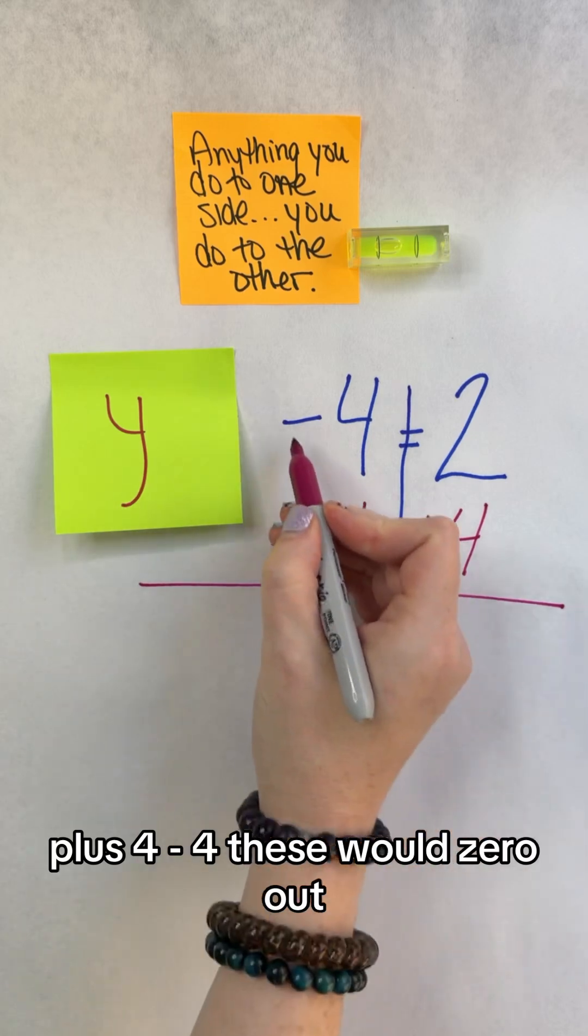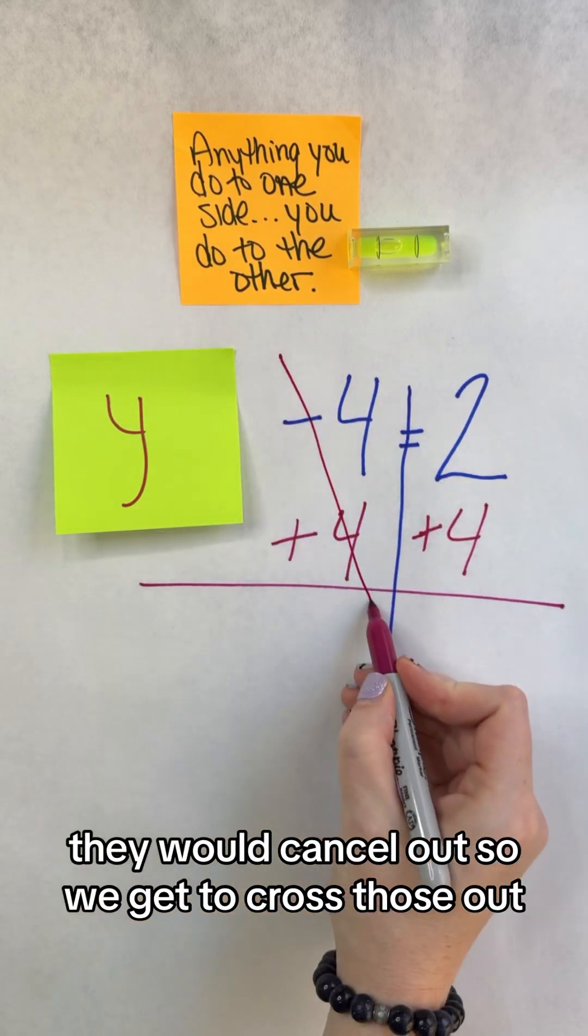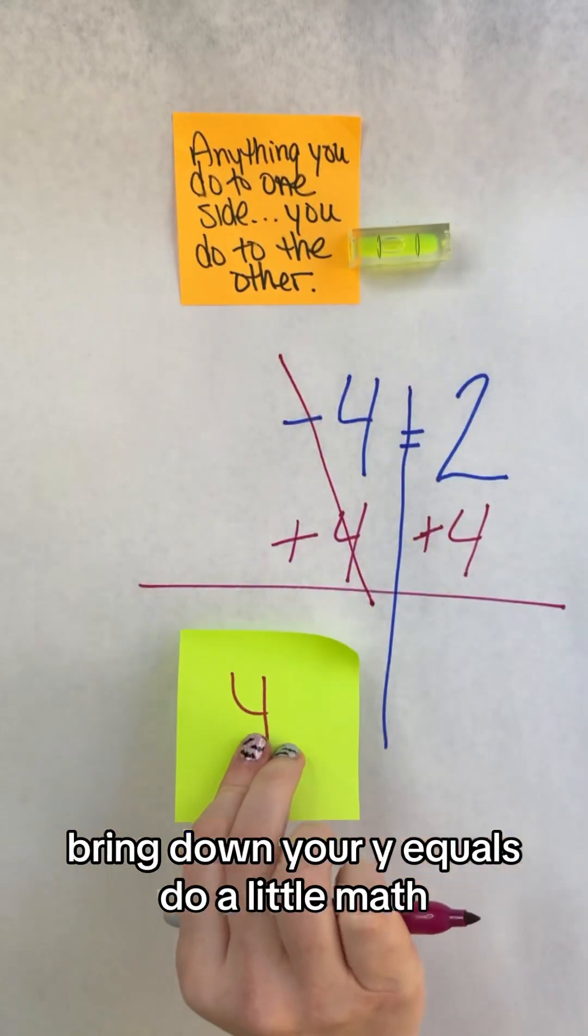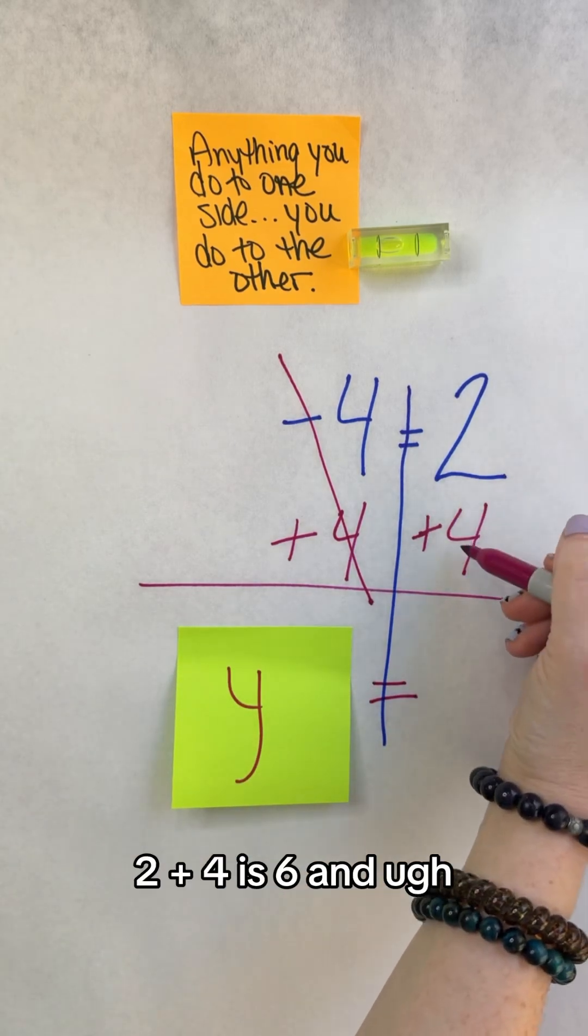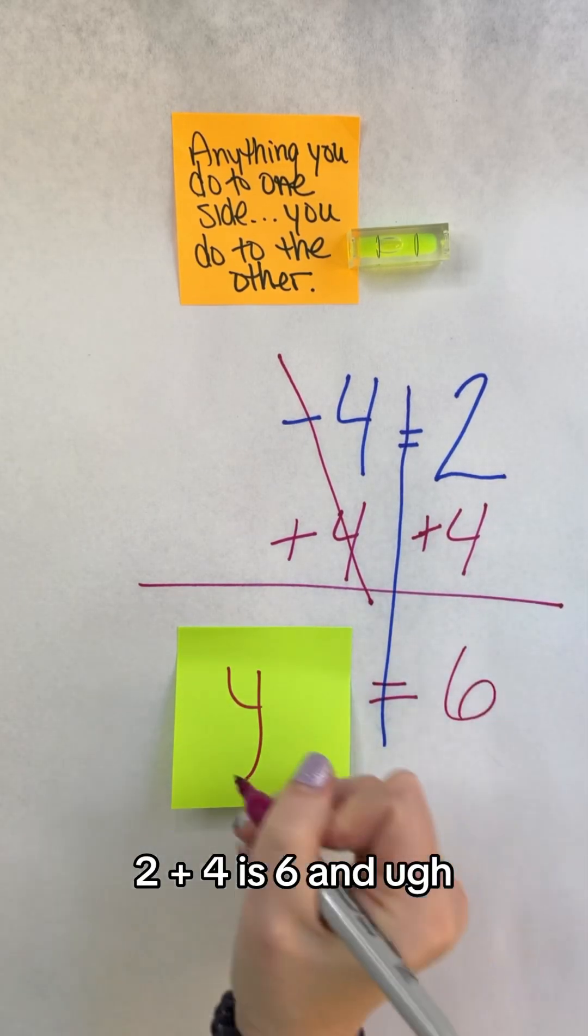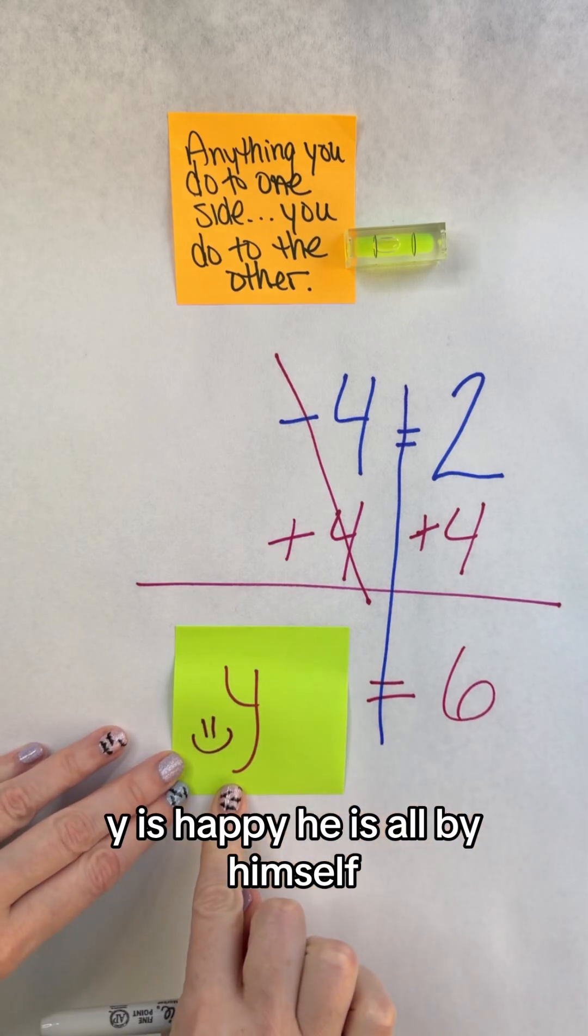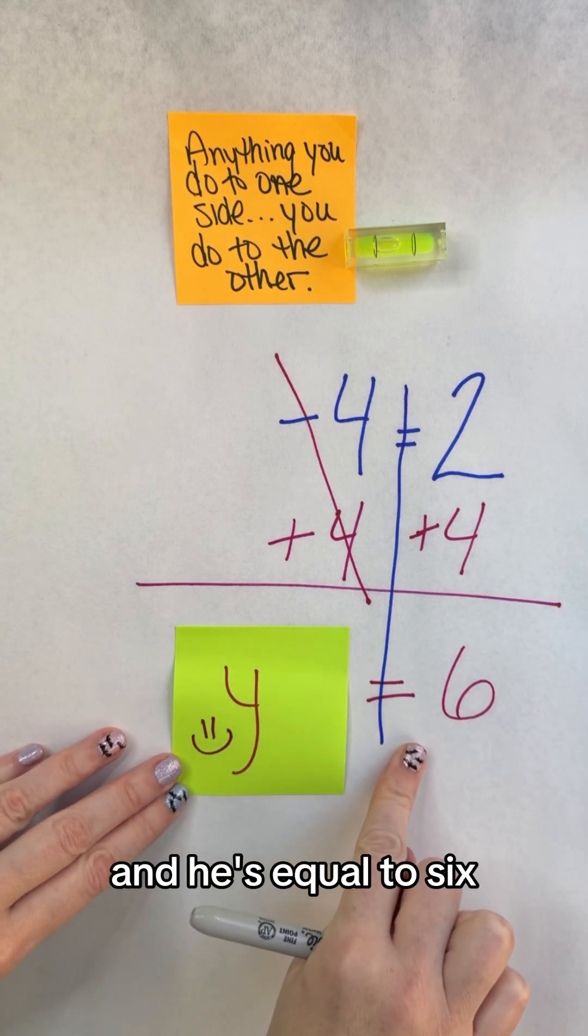Plus 4, minus 4, these would zero out. They would cancel out, so we get to cross those out. Bring down your y. Equals, do a little math, 2 plus 4 is 6, and y is happy. He is all by himself, and he's equal to 6.